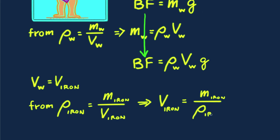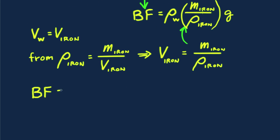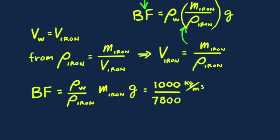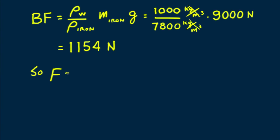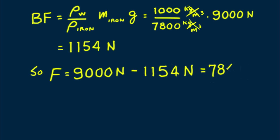Substituting M_iron over ρ_iron for the volume of water, we now show the BF to be equal to the ratio of the densities times the weight of iron, and we express the density of water as 1000 kilograms per meter cubed, and the density of iron is 7,800 kilograms per meter cubed, and the buoyant force is 1,154 newtons, which means the force Winnie exerts is less than the previous 9,000 newtons, and is 7,846 newtons. Problem solved. Winnie holds the barbell overhead with only 7,846 newtons of force, for as long as she can hold her breath.